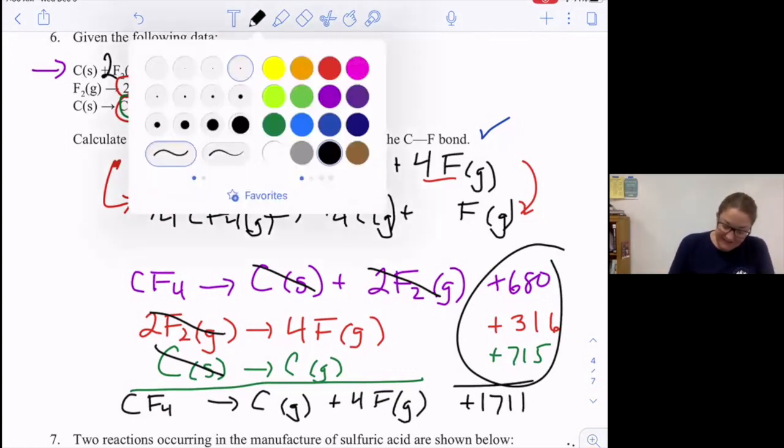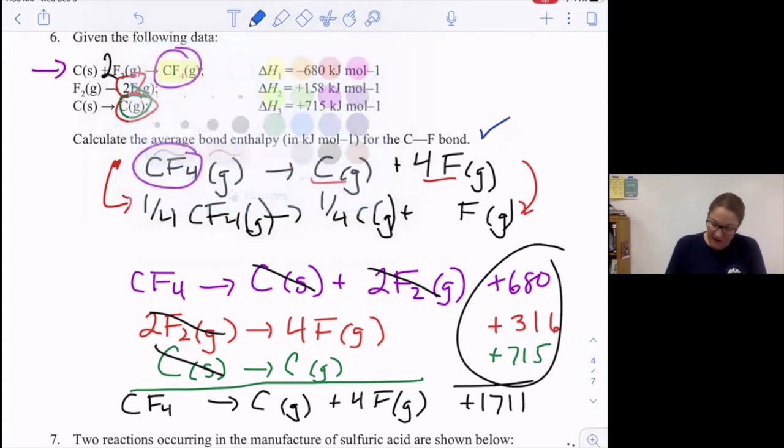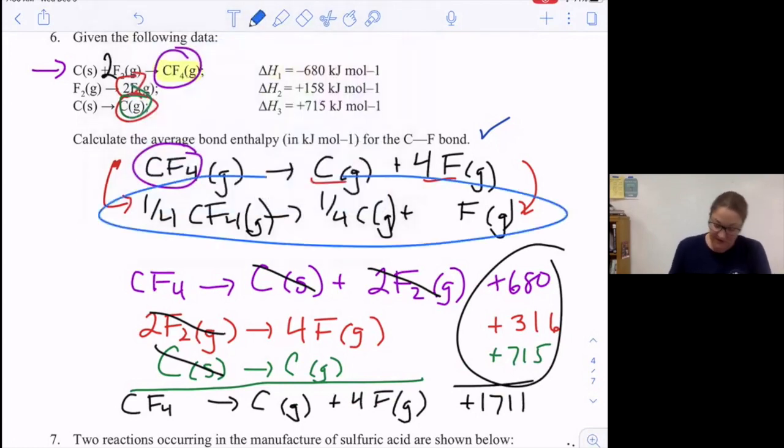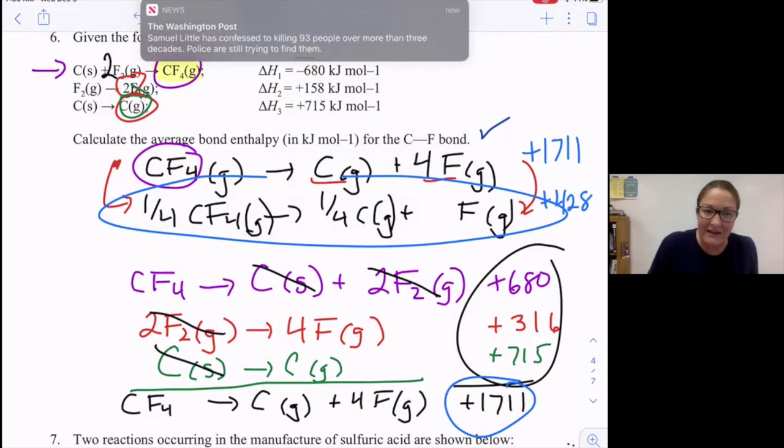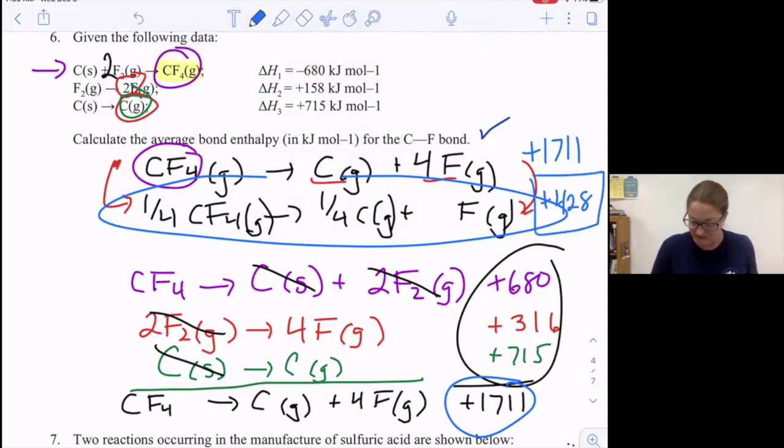Now for my last step. I actually want this reaction, which is one fourth of this reaction. So if this reaction has a value of positive 1711, I can divide it by 4 to get positive 428. And that is my answer to this problem.